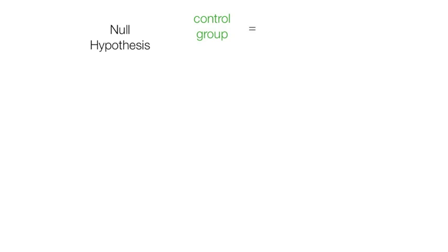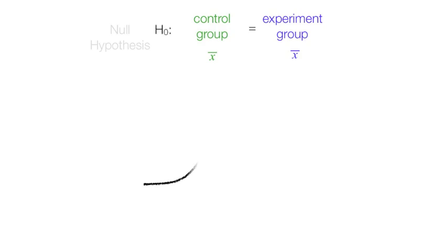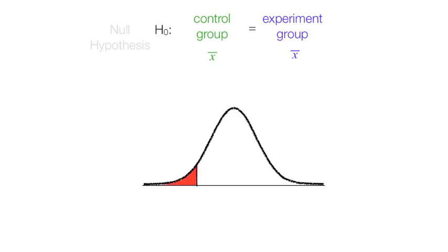The very first thing we do is set up the null hypothesis, and we make the assumption that the control group and the experimental group are the same — there's no difference. Typically it's indicated by H0. It's always useful to draw a bell curve, and the red areas are the rejection regions. I'm going to do a two-tail test; I typically always recommend doing a two-tail test.